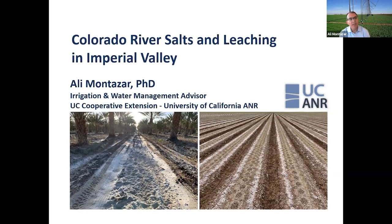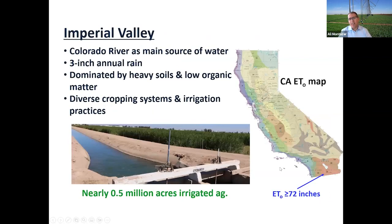Good afternoon everybody. Two images here — the left side shows a date palm three miles away from the Salton Sea, and the right side shows an onion field during germination, taken last December under drip irrigation. These pictures demonstrate what we're talking about. When someone asks me to introduce Imperial Valley, I can do that in a couple of sentences: we have the Colorado River as the main source of water, very little rain — about three inches annually — and a very diverse cropping system and irrigation practices.